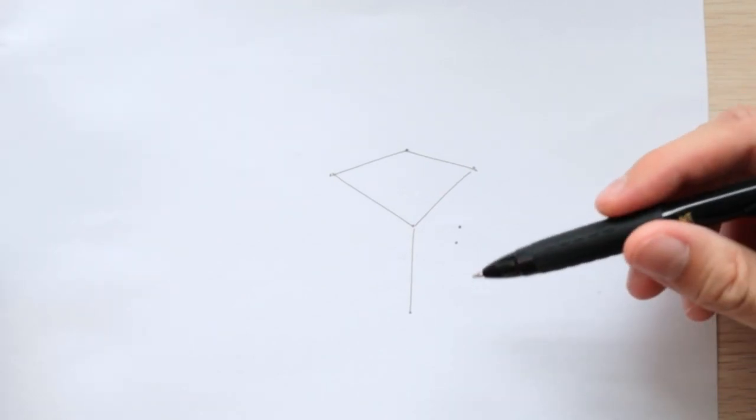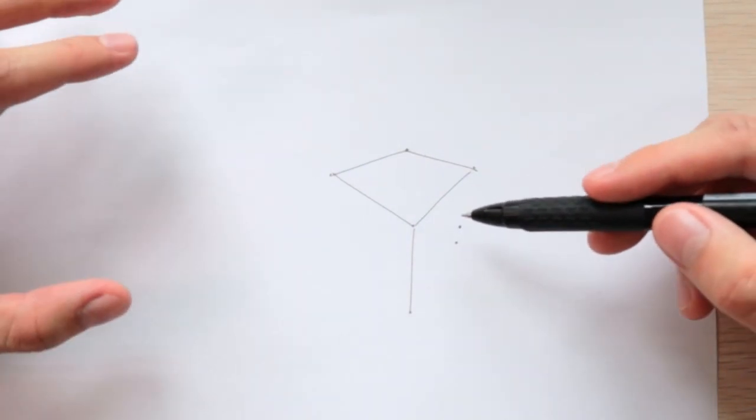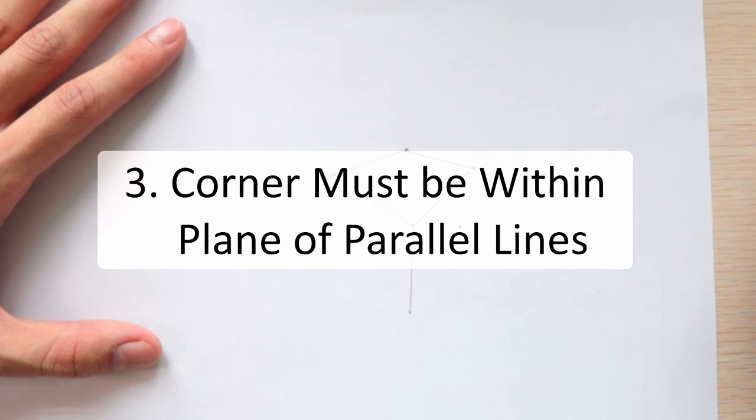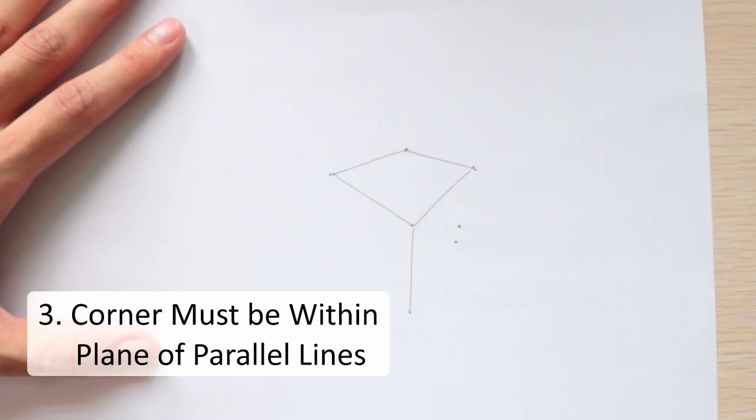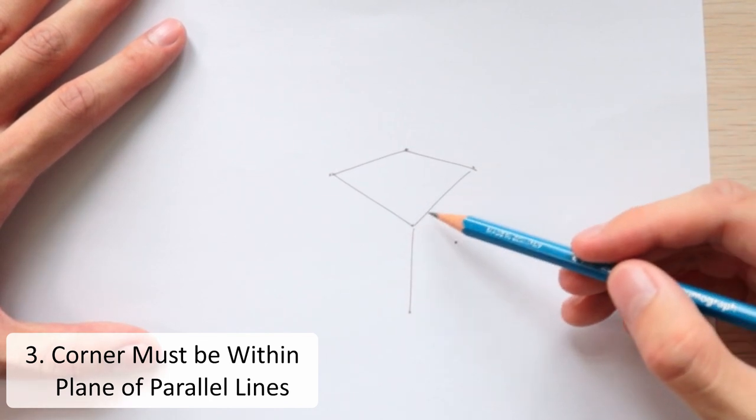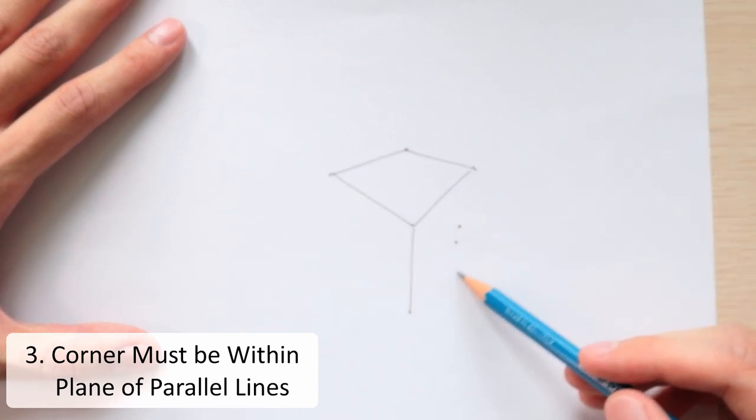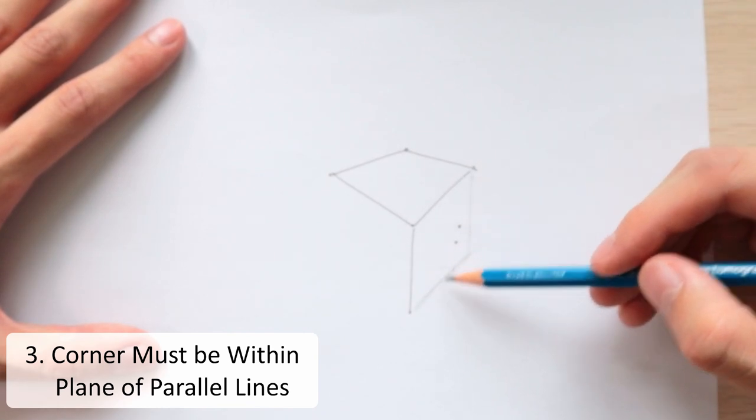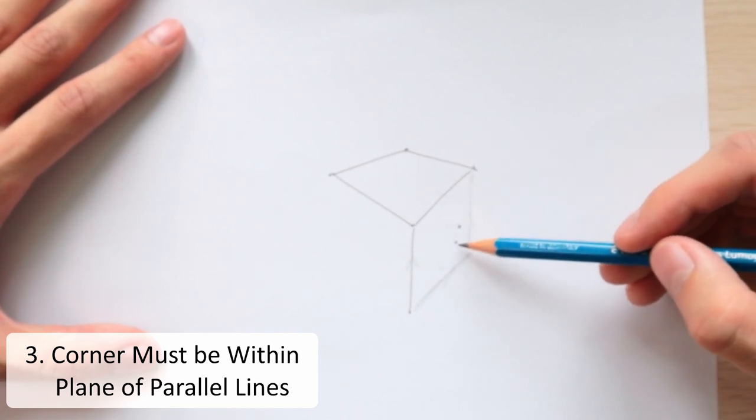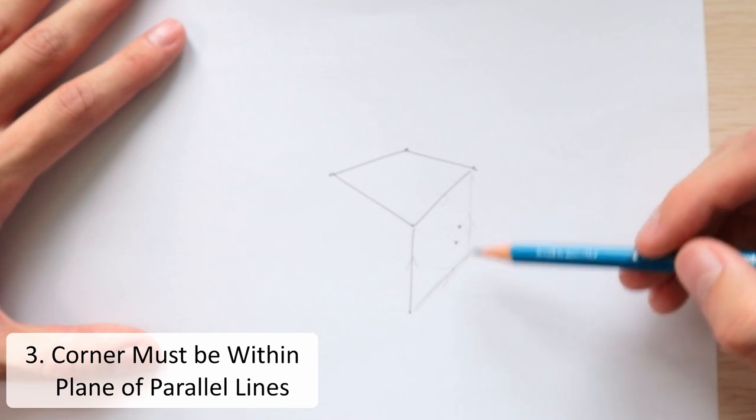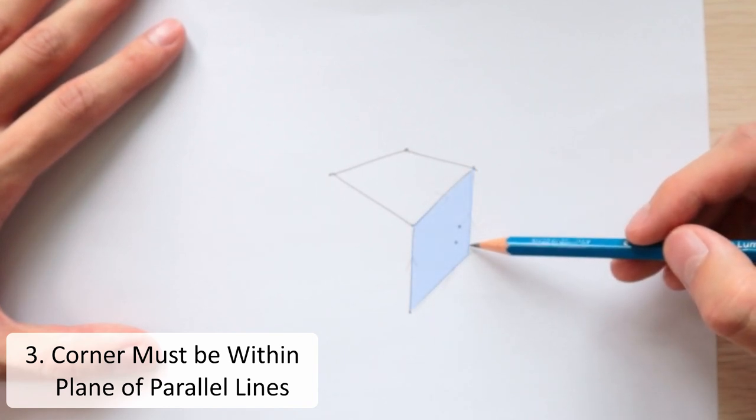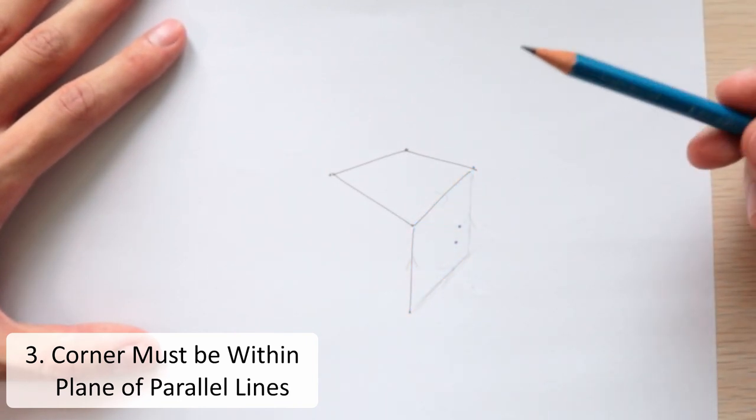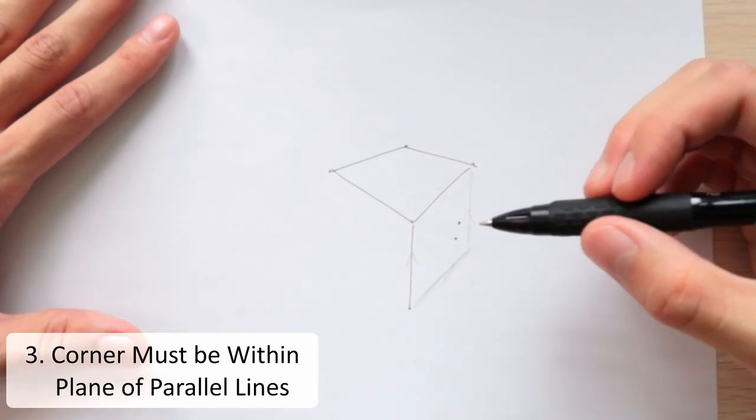So another cue to check when you're placing your corners is that it should be inside the region of the plane that is formed by the parallel lines of these edges. So what do I mean by this? If I use a pencil to draw in the parallel lines of these edges, so let me add a parallel line. So this is about parallel to this and this is about parallel to this. You want to make sure that your corner doesn't lay outside of this plane. It has to be within this plane. So if your corner is outside, then you know that your box is going to appear wrong.